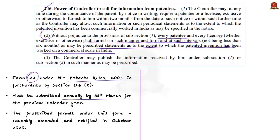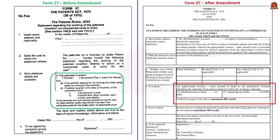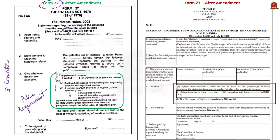The prescribed format under Form 27 was recently amended and notified in October 2020. The earlier format asked for the quantum of the patented product manufactured in India and the quantum imported from other countries. Very importantly, the earlier Form 27 also asked whether the public requirement had been met partly, adequately, or to the fullest extent at a reasonable price. Whenever such a form was submitted, the controller would publish the information under Section 146, helping the public to ascertain whether the patented product fulfilled all three conditions. If not, an interested person could apply for compulsory licensing.